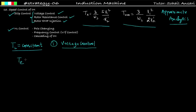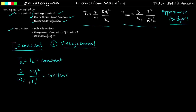Let us start with voltage control. Under stable operation, electromagnetic torque equals load torque, and since load torque is constant, we can write: 3/(ωs) × sV1²/R2' = constant. Here, 3 is constant, ωs is constant, and R2' (the rotor resistance) is also constant.